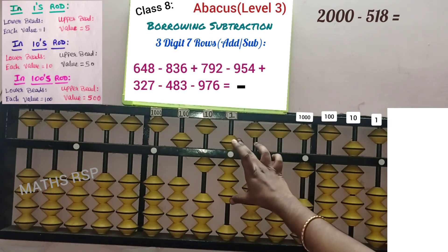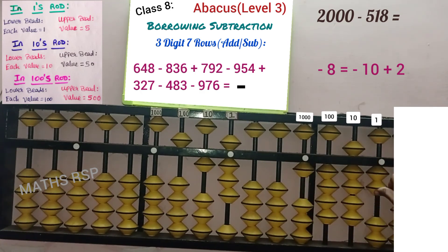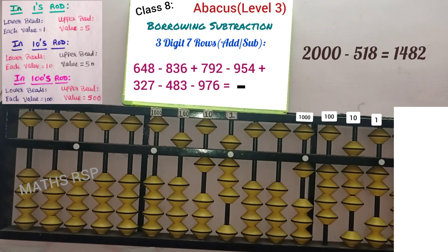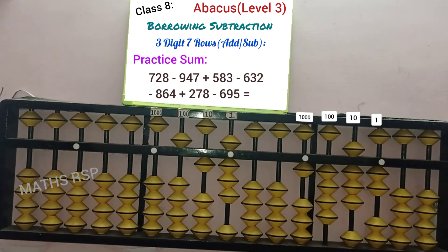Next, in the 1 strad, 8 beads are available — 5, 6, 7, 8. 8's big friend is 2, so add the 2 beads in the same 1 strad: plus 2 and remove the both in the 10 strad — minus 10. That's it. This is our final answer: 1, 4, 8, 2. Since our borrowed beads were not returned, we are taking the answer from the right side part — so minus 1482 is our answer. This sum is for your practice; you can do it with your abacus. If you have any doubts, you can comment. Thank you.